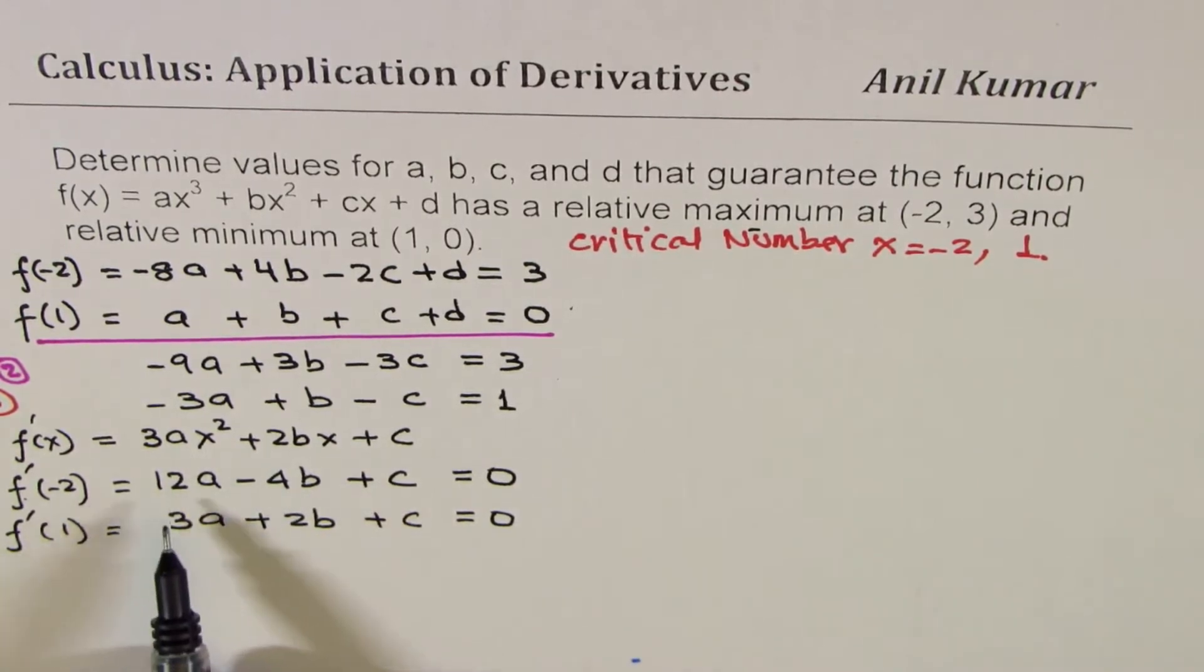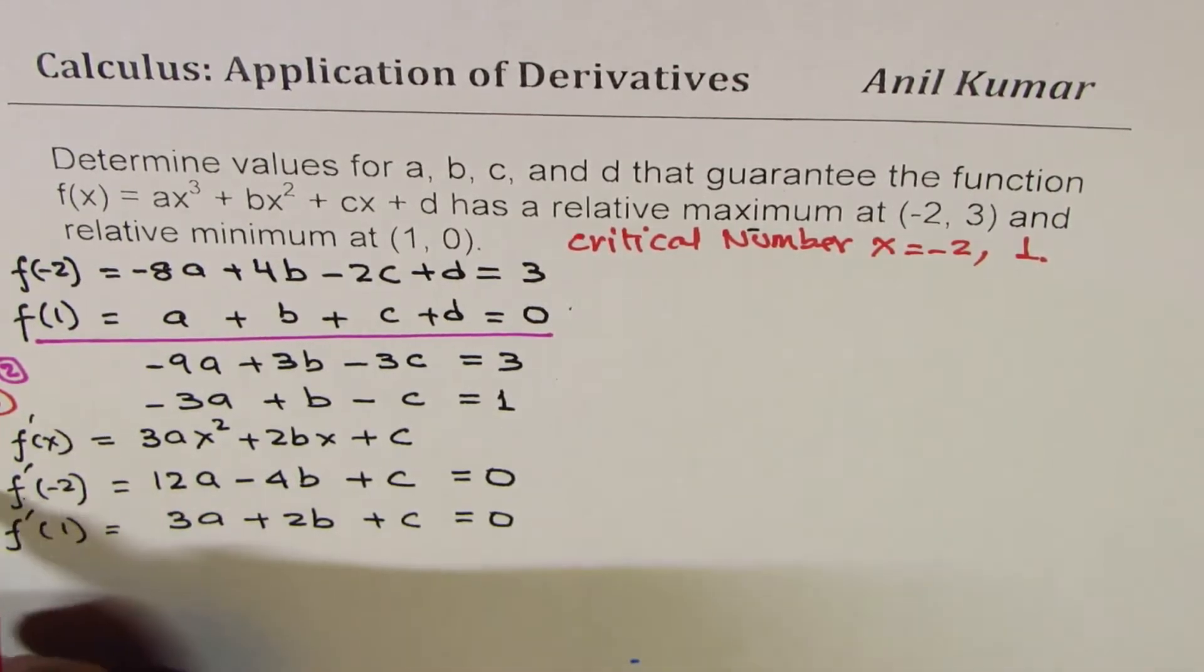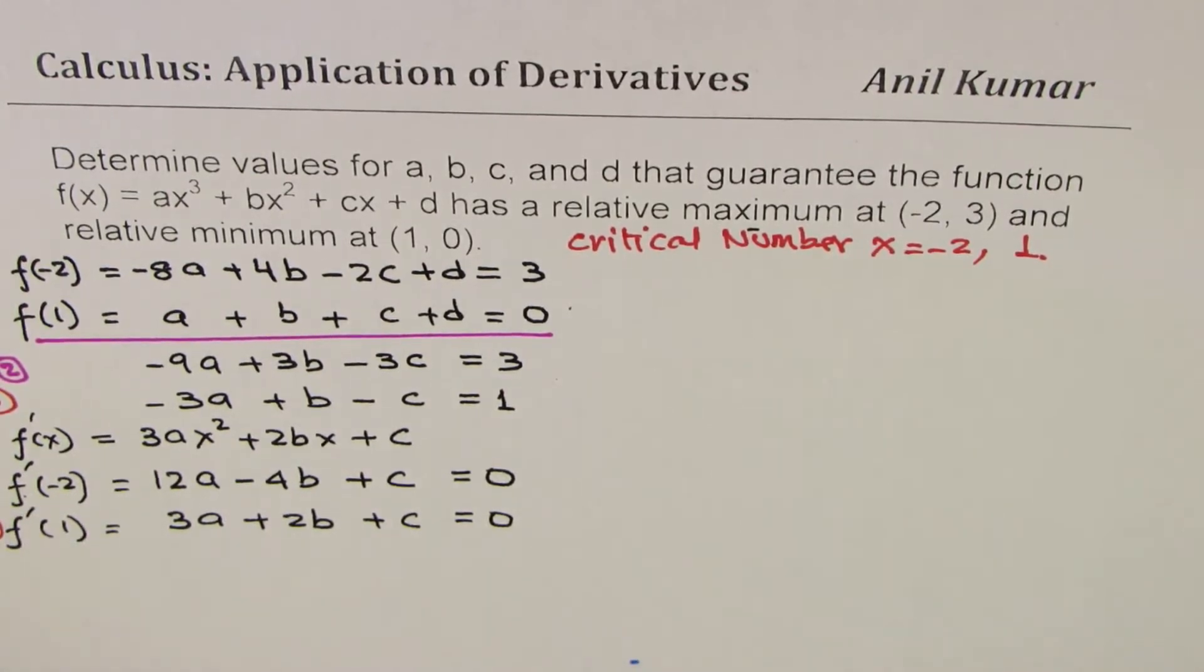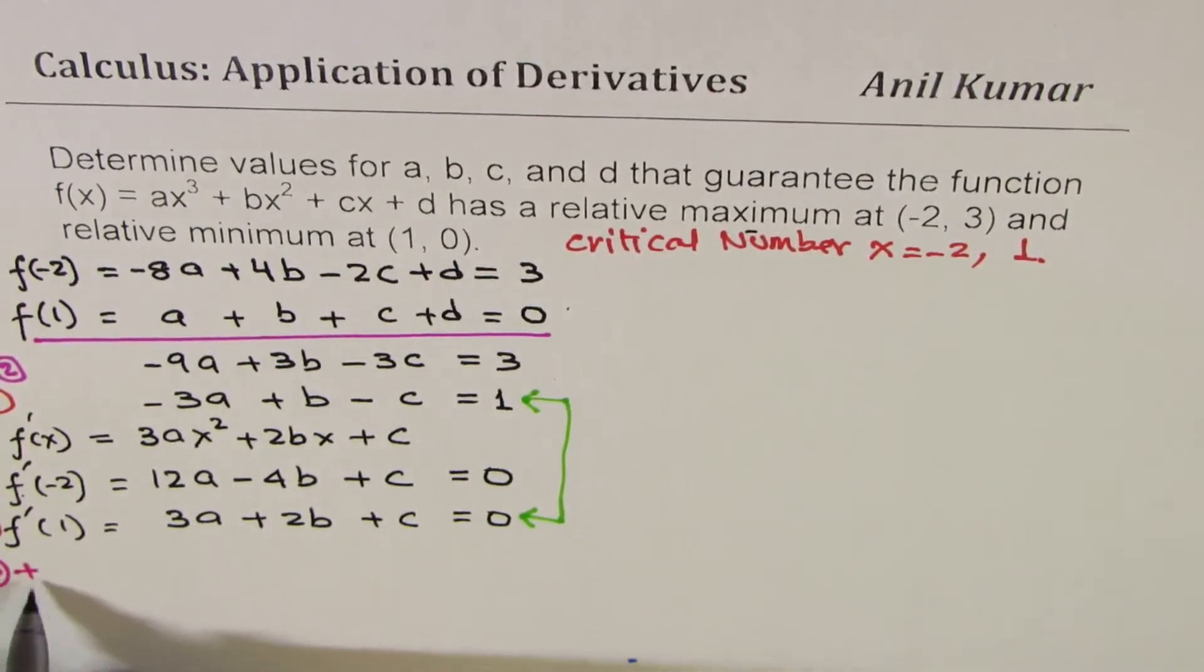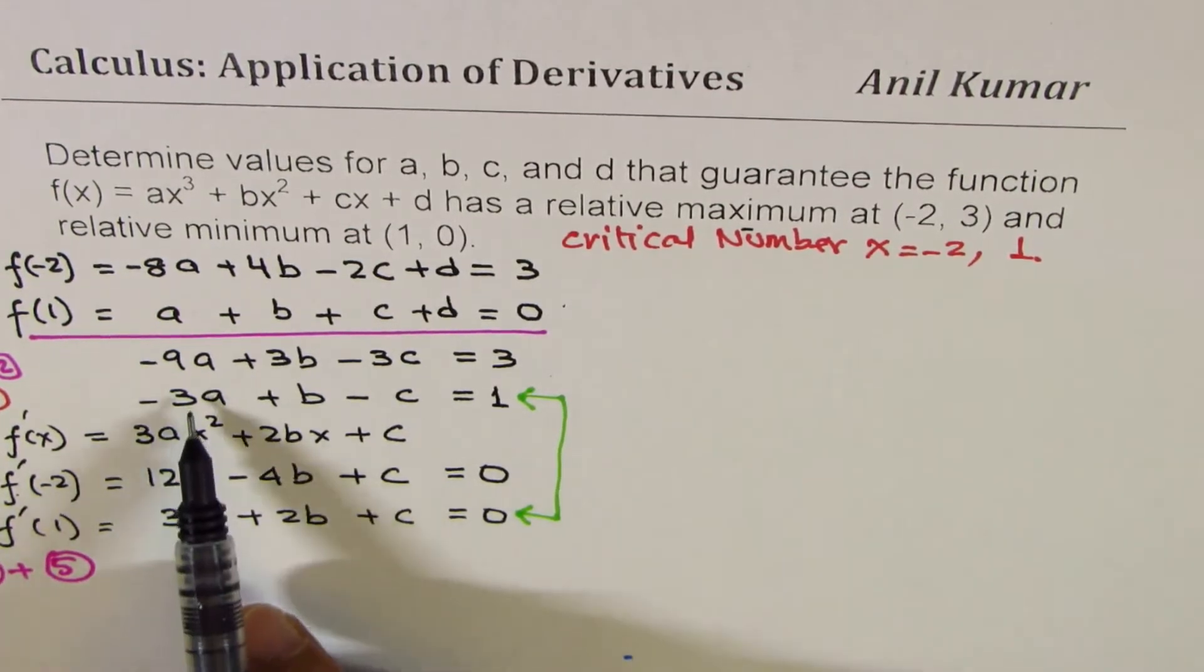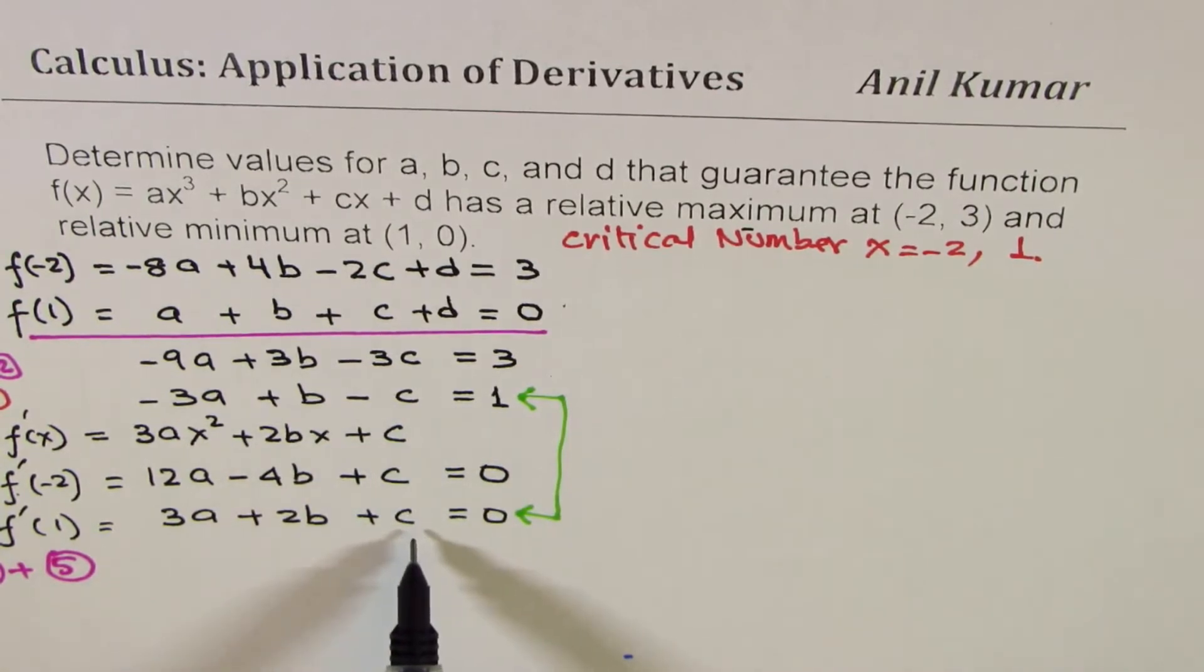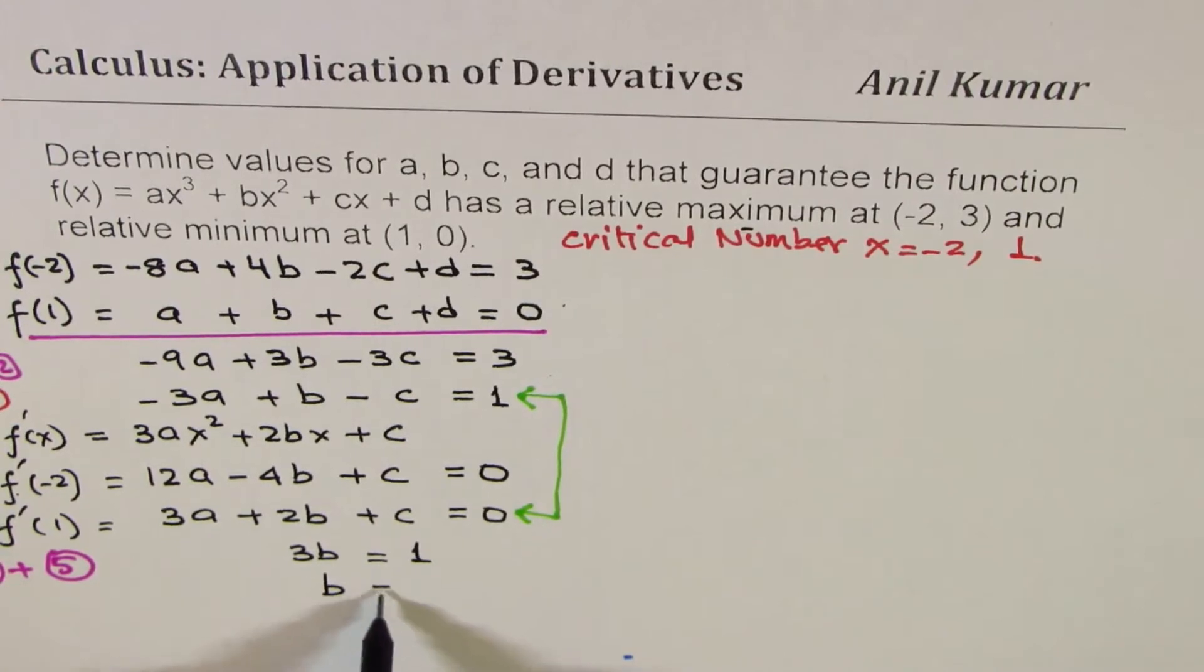Now we have these three equations. Equation number 3 is -3a + b - c. Here we have 3a + 2b + c. So we could actually use equation 3 in this equation. This is equation 4, this is 5. So now if I combine these two equations, -3a and 3a cancel out, -c and c cancel out. We are left with 3b. When you add these two, we get 3b = 1 and that gives you b = 1/3.